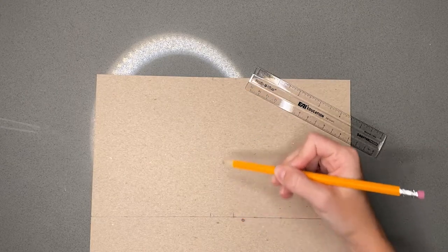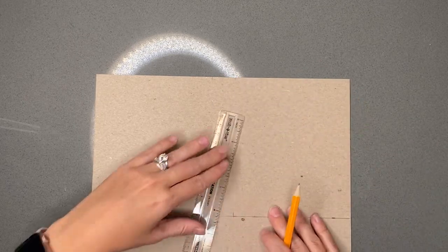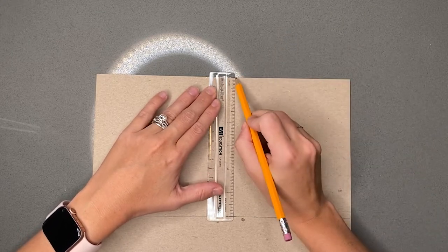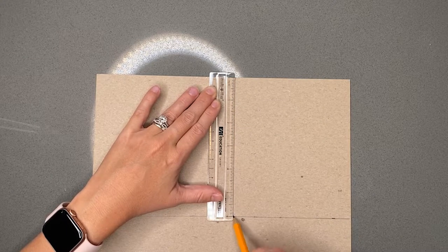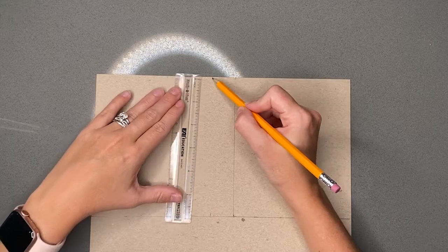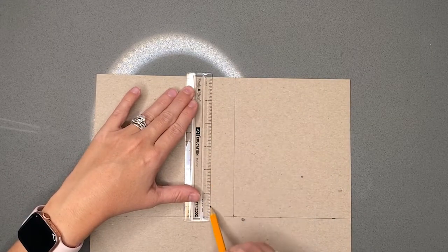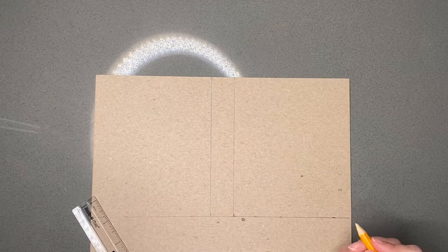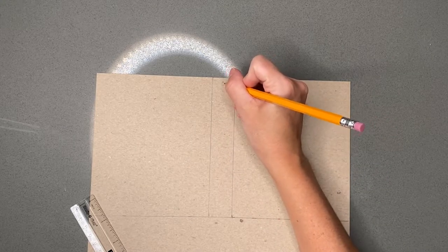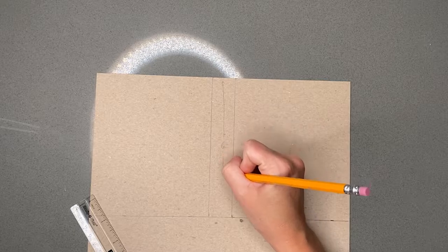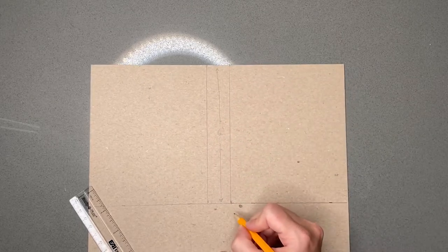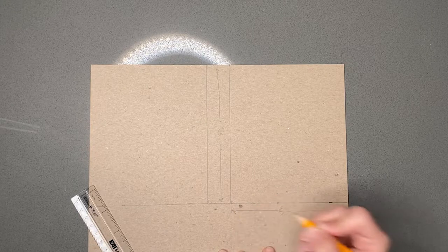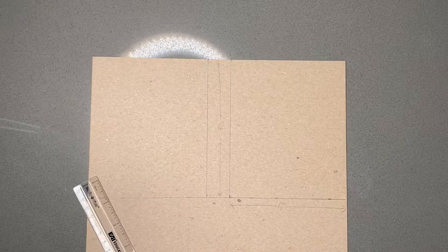Now I'm going to connect these two dots. I'm going to take my ruler and line this up and connect my dots. Now I end up with two rectangles that are six inches by five inches.